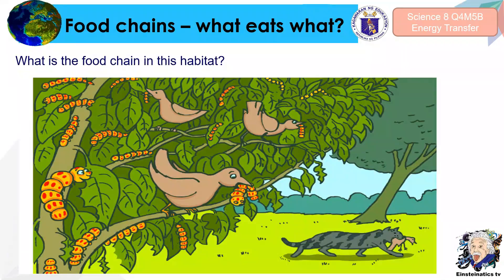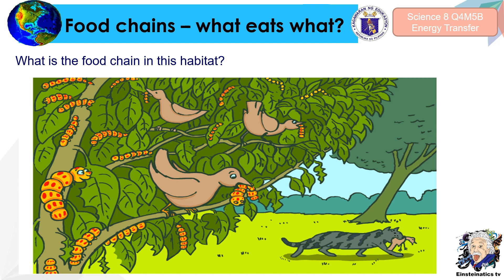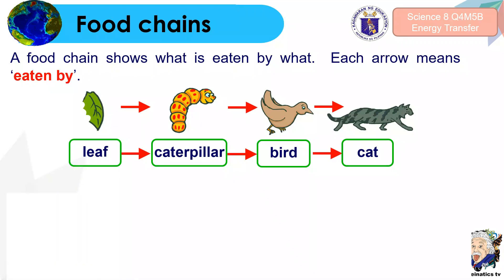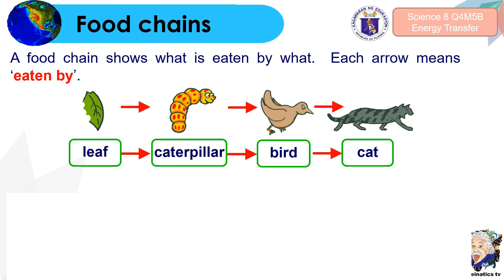So, are you familiar with a food chain? A food chain is quite simple — it shows what is eaten by what. A food chain shows what is eaten by what, and each arrow means 'eaten by.' So when you see this arrow, it means 'eaten by' or 'is consumed by.'